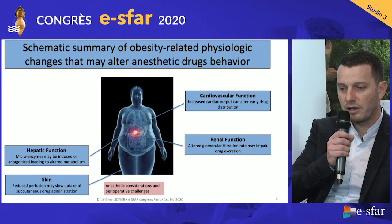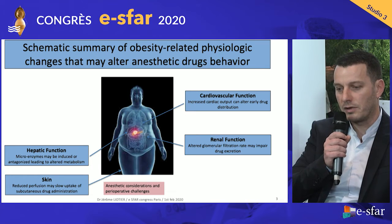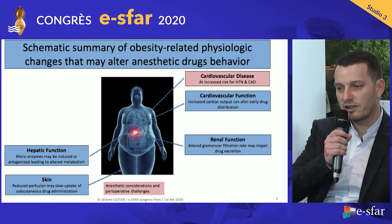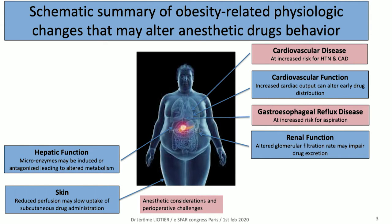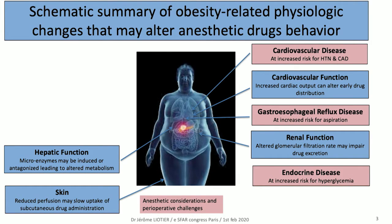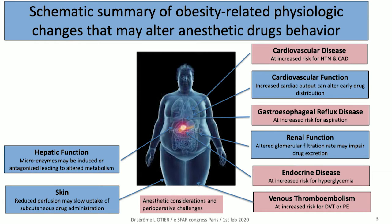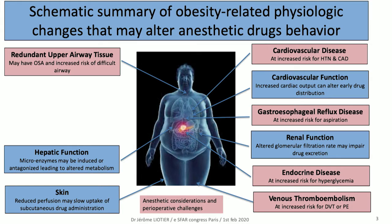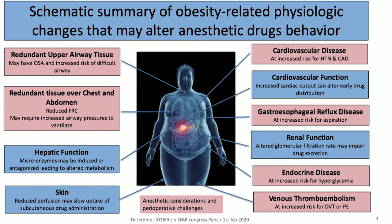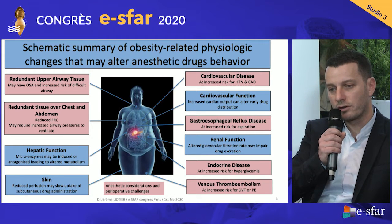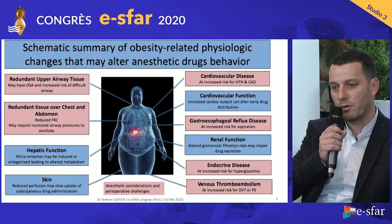Here in red you have anesthetic considerations and perioperative challenges. There are cardiovascular diseases with increased risk for hypertension and coronary artery disease, gastroesophageal reflux disease with increased risk for aspiration, endocrine disease with increased risk for hyperglycemia, and more venous thromboembolism with increased risk of deep venous thromboembolism or pulmonary embolism. Obese patients also have redundant upper airway tissue, obstructive sleep apnea, and increased risk of difficult airway. There is redundant tissue over the chest and abdomen with reduced functional residual capacity that may require increased airway pressure to ventilate.